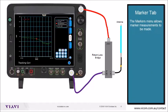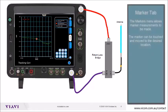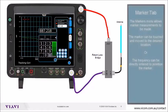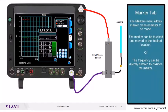The markers menu allows marker measurements to be made using the marker tab. The marker can be touched and moved to the desired location, or the frequency can be directly entered to position the marker if you prefer.